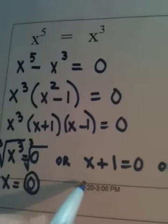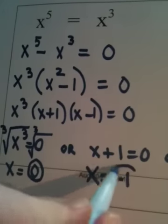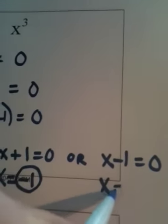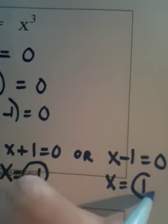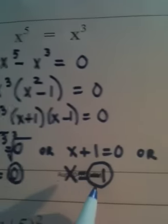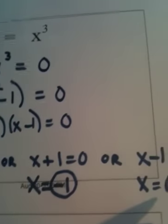When I solve this equation, I simply get x equals a negative 1. And when I solve this equation, I get that x is a positive 1. So I have three answers. I have a 0, a negative 1, and a positive 1.